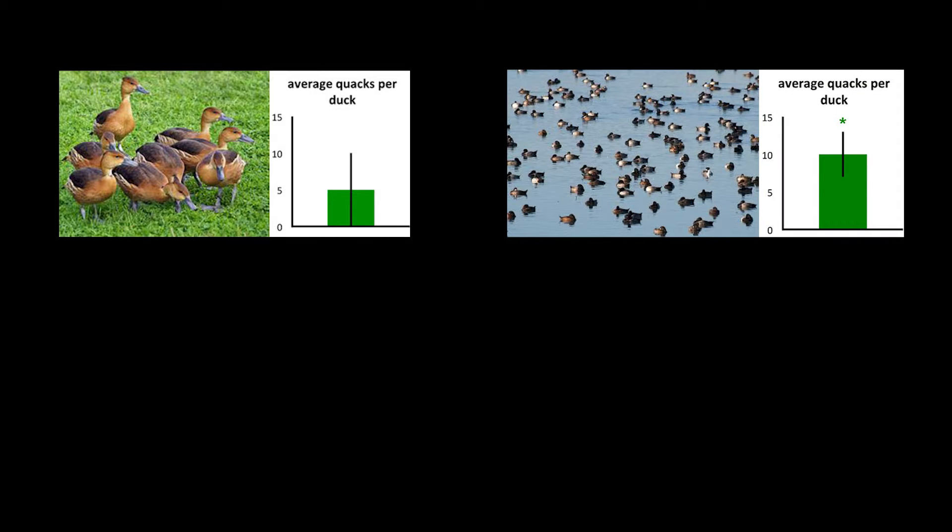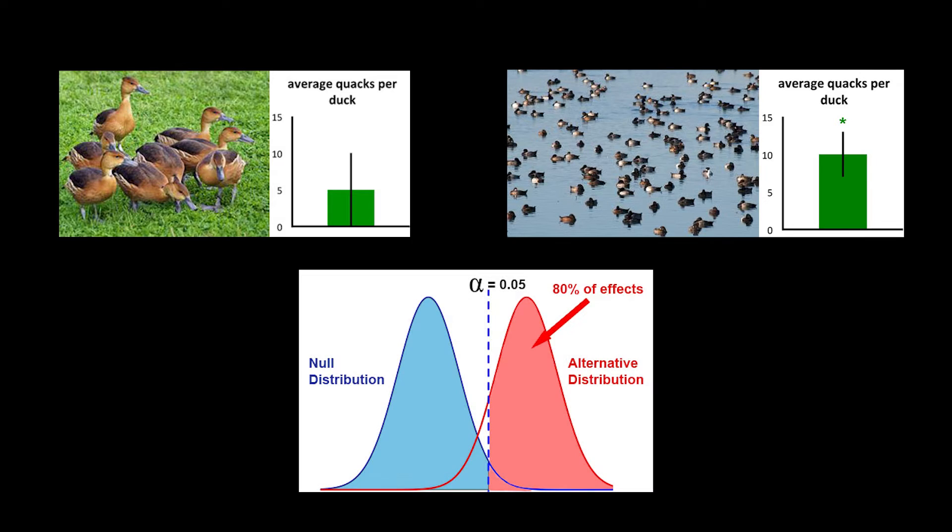80% power is the standard for fMRI studies. When people talk about a study having 80% power, they mean that when they run the study, there's an 80% chance they'll find a significant effect if it's there. Grant reviewers are taking a gamble when they fund your study and they want good odds that it'll work.